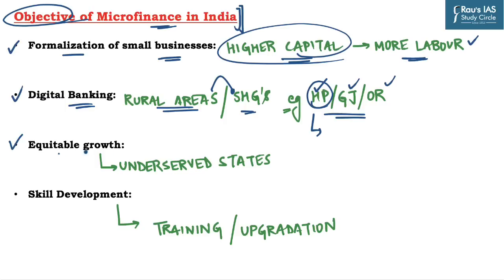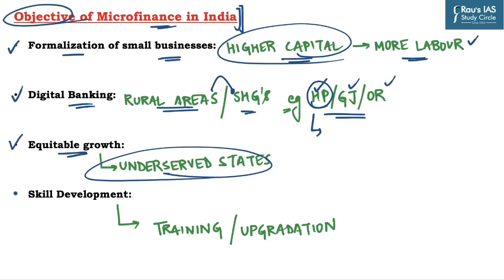The next objective is equitable growth — as microfinance activities are mostly concentrated in underserved states, it helps in bridging regional imbalance created due to poor implementation of state policies. The last objective is skill development — when money is available, people invest in training and upgrading their skills to earn more and improve their quality of life.